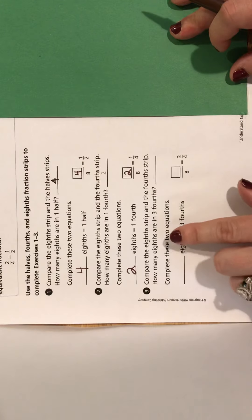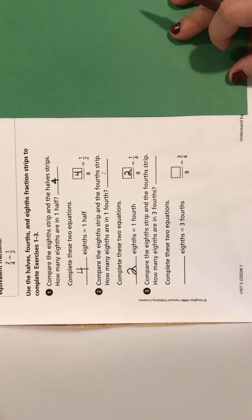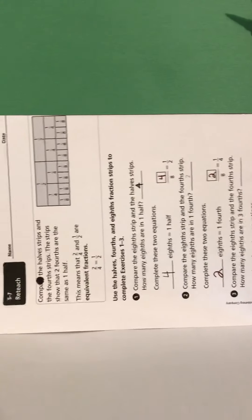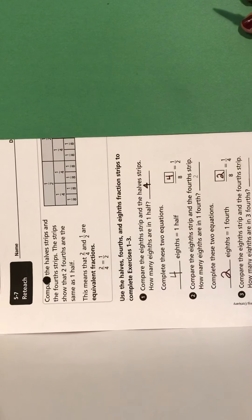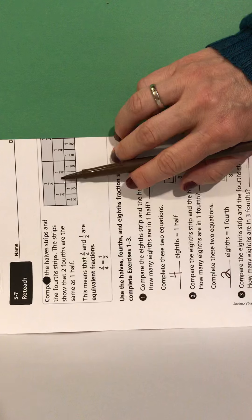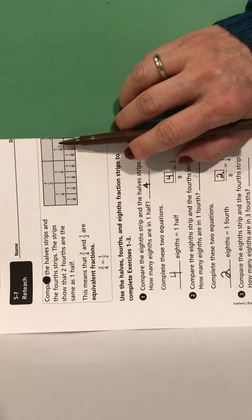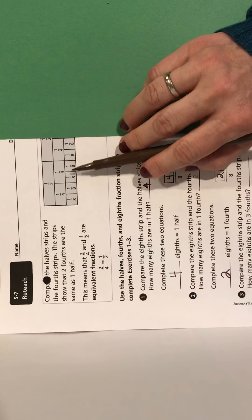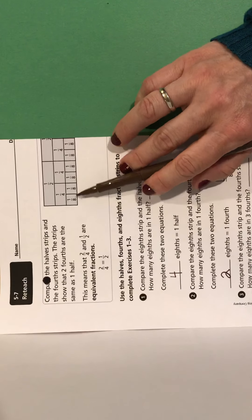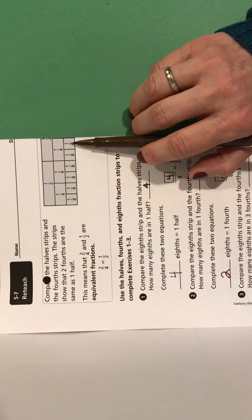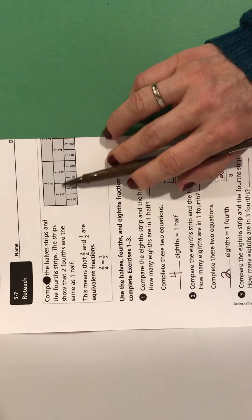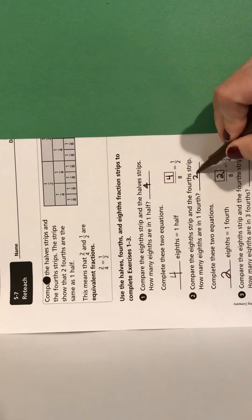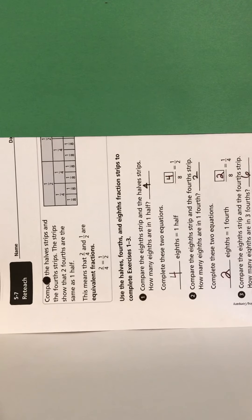Now they want us to compare the eighths strip and the fourths strip: how many eighths are in three fourths? This one's a little bit bigger, so I'm going to mark off one fourth, two fourths, three fourths and count how many eighths. One, two, three, four, five, six. So six eighths takes up the same amount of space as three fourths. Six eighths equals three fourths.